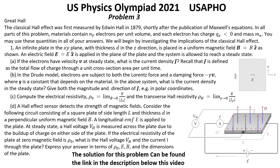Question D: A Hall effect sensor detects the strength of magnetic fields. Consider the following circuit consisting of a square plate of side length L and thickness D in a perpendicular uniform magnetic field B. A longitudinal EMF E is applied to the plate. At steady state, a Hall voltage Vh is measured across the plate due to the buildup of charge on either side of the plate.